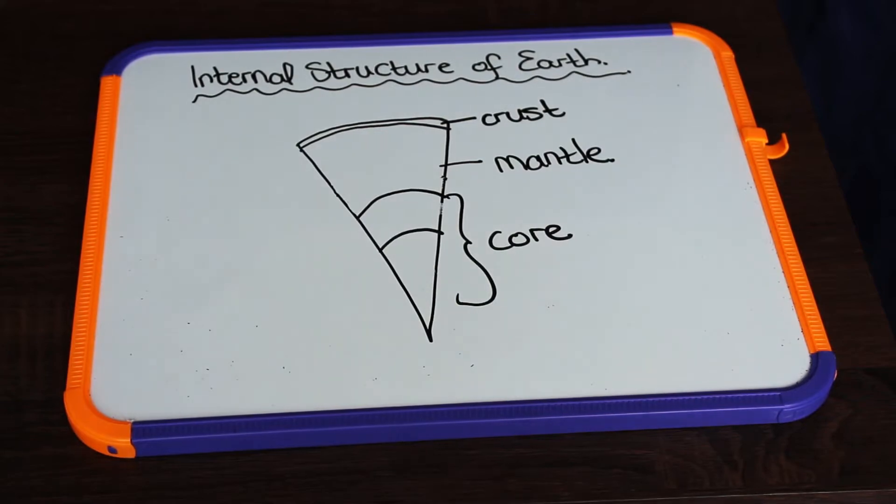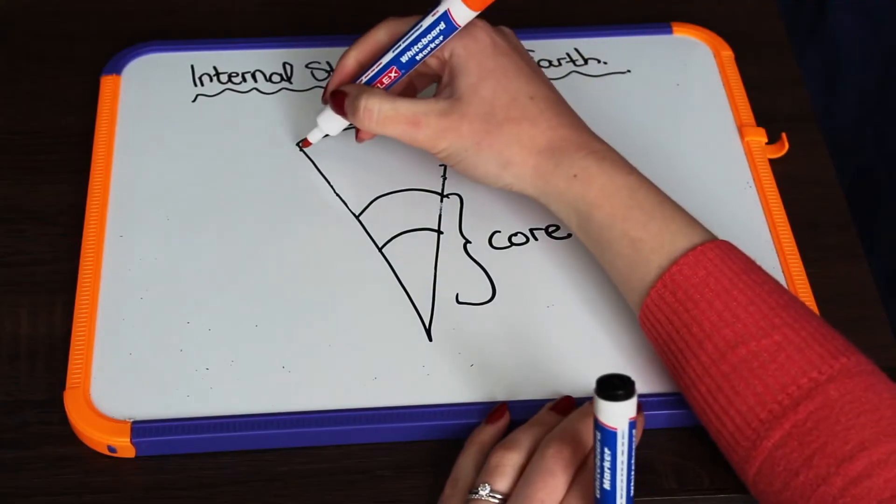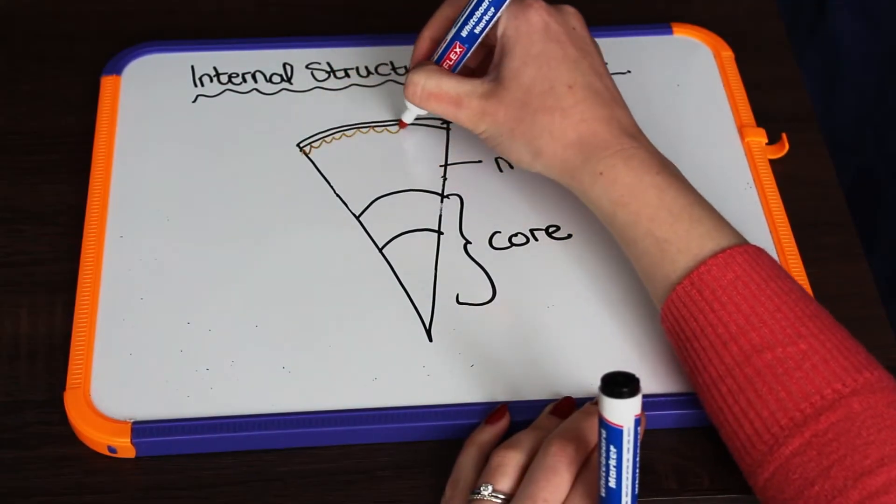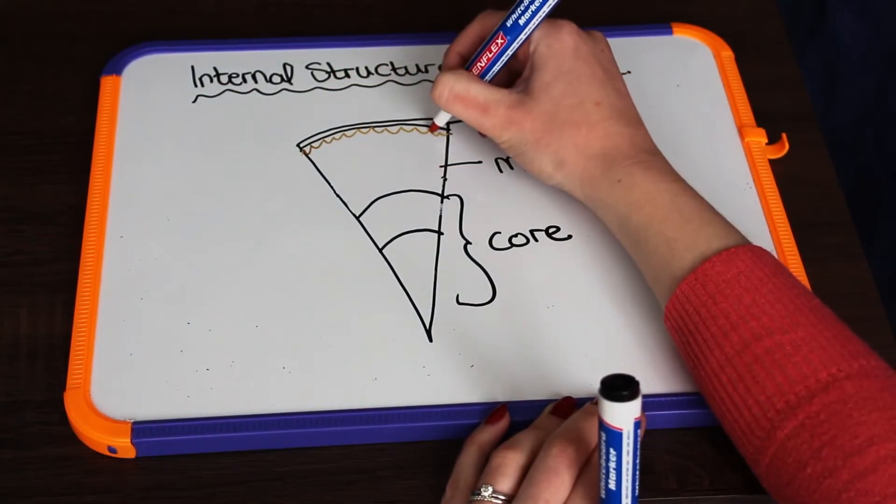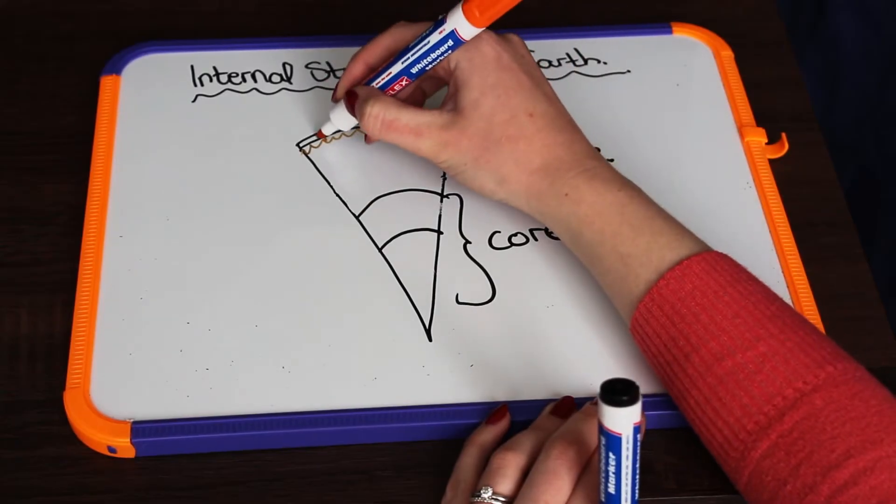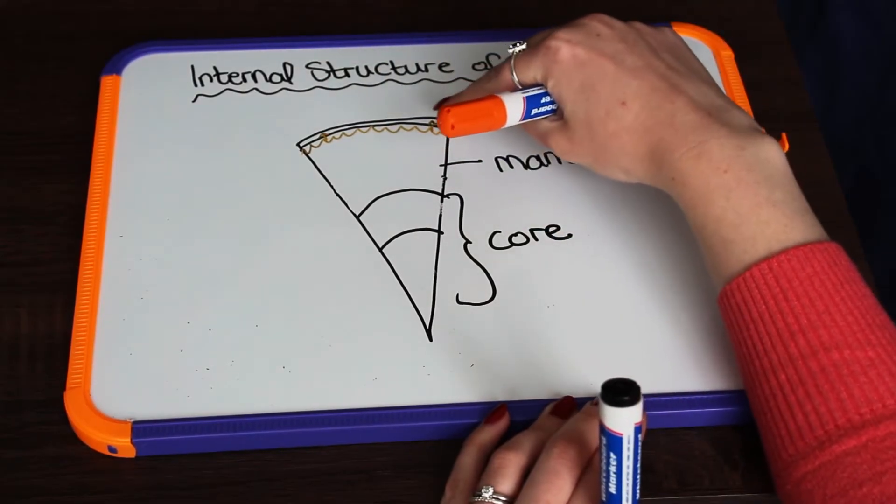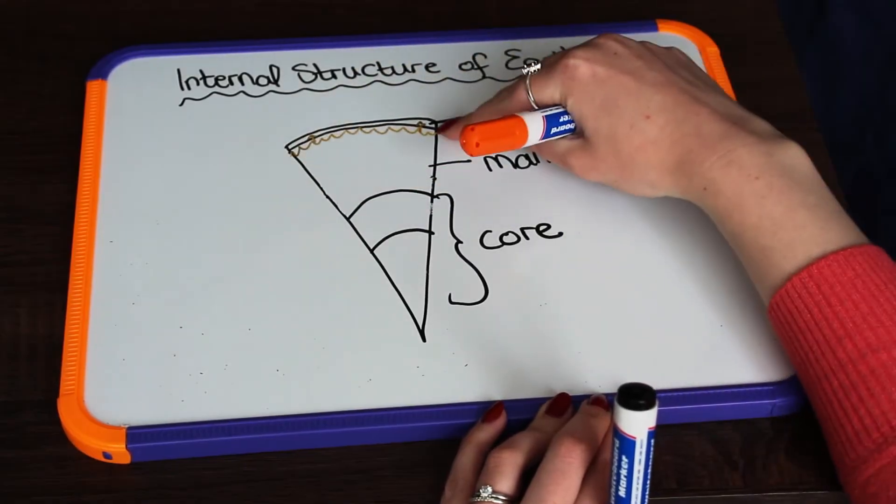Now when we are looking at igneous rock formation, we are talking about magma in our upper mantle that is going to push its way through joints and fractures in the crust. So this is happening right near the surface over here.